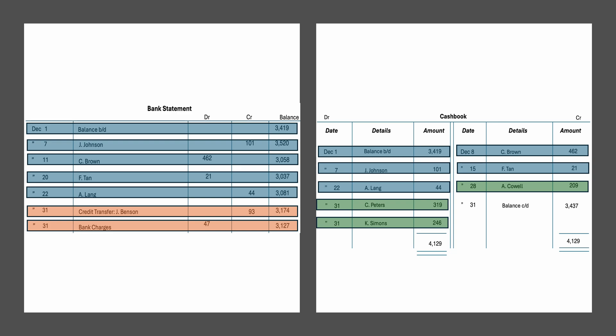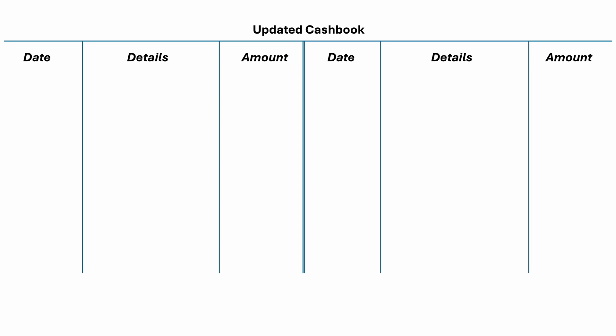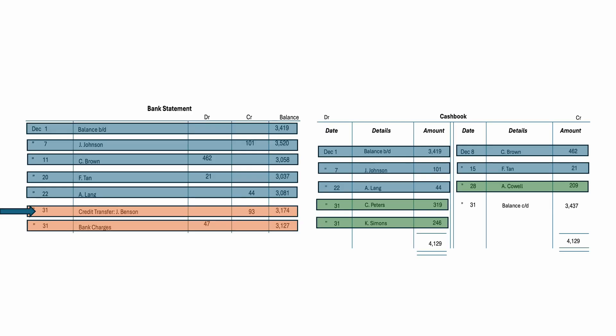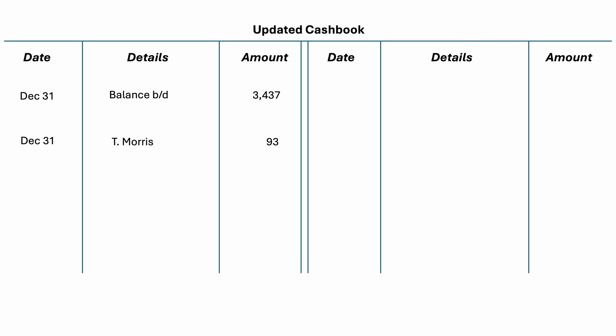To record the items shown on the bank statement but not in the cash book, an updated cash book is drawn up. We first enter the balance brought down from the original cash book. The next transaction to enter is the credit transfer from Jay Benson. Items on the credit side of the bank statement will be shown on the debit side of the cash book, because when money is deposited into the bank, it does not belong to the bank — the bank is just keeping it for you. This transaction is on the credit side of the bank statement, so in the updated cash book it goes on the debit side.